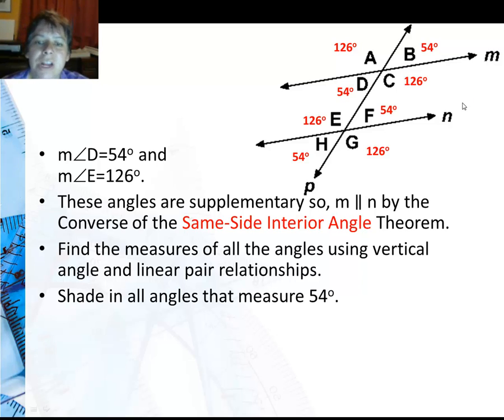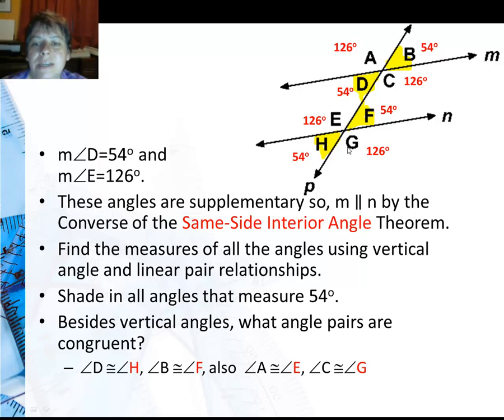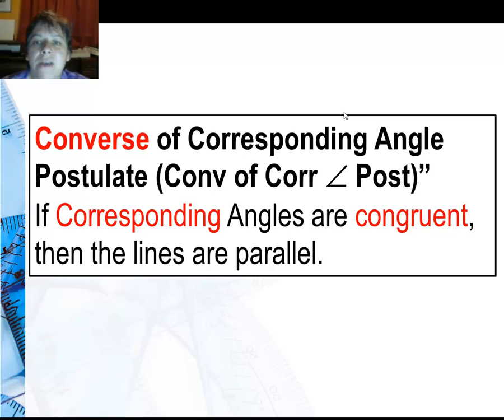Now I'm going to shade in all of the angles that are 54 degrees. There they are. And one thing that's interesting, besides the vertical angles, what other angle pairs are congruent? Well I can see that D is congruent to H and B is congruent to F. Not only that, if I compare the non-shaded, A is congruent to E and C is congruent to G.